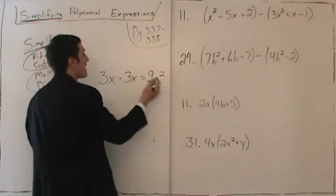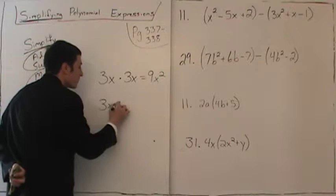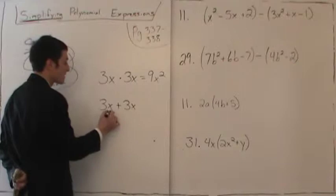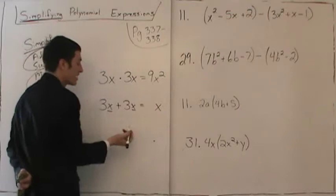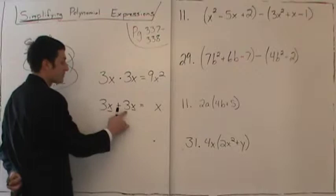Now when you add, something must match and what matches doesn't change — this is a completely different process. We look for something that matches; we see that x matches x. X will not change. We write what matches and add what's in front: 3 plus 3 gives 6, so we end up with 6x.